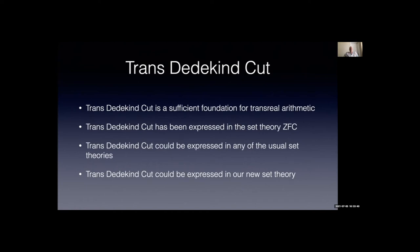Given the choice of an identical foundation for transreal and real arithmetic, you may choose real arithmetic with an infinite number of error states or transreal arithmetic with no error states. I maintain it is perverse to choose real arithmetic. The transdedekind cut is a sufficient foundation for transreal arithmetic, and has been expressed in ZFC. It could be expressed in NFU, GNB, or any set theory, including the new trans set theory I'm about to discuss.